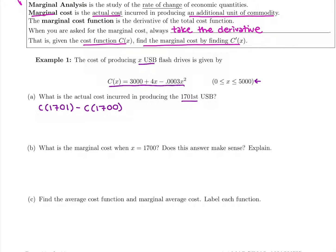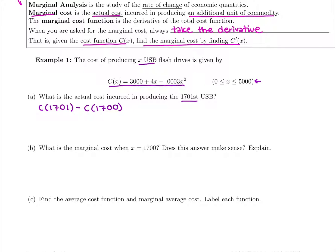We plug in the number we want and subtract the number before. The total cost for all 1,701 USBs: I grab my calculator and plug in 3,000 plus 4 times 1,701 minus 0.0003 times 1,701 squared, giving $8,935.98. Then plugging in 1,700, I get $8,933 even. The difference is $2.98.